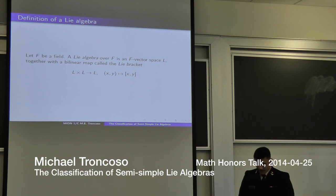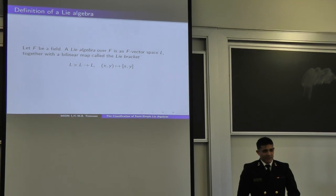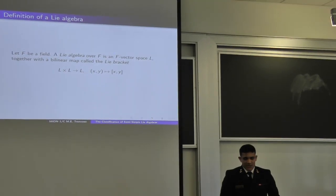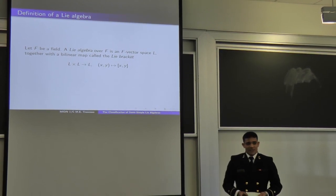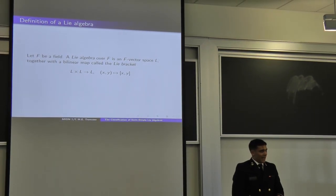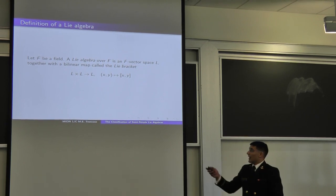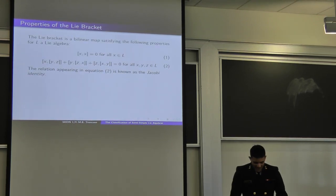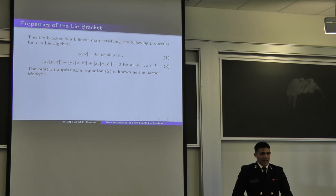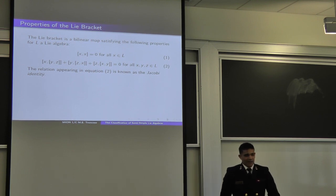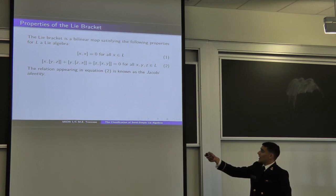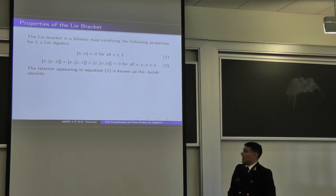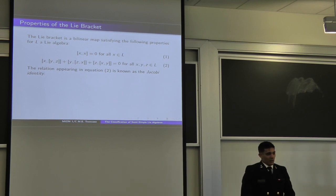To start things off, I'd like to define what a Lie algebra is. If you let F be a field, a Lie algebra over F is an F-vector space L, together with a bilinear map called the Lie bracket from L cross L to L, that takes the element (X, Y) in L cross L and brings it to [X, Y]. We have a couple of axioms: the Lie bracket of anything with itself is always zero, and we have the Jacobi identity, which is a measurement of the Lie bracket's failure to associate.